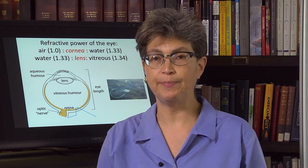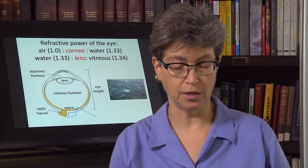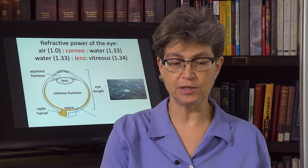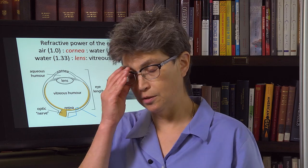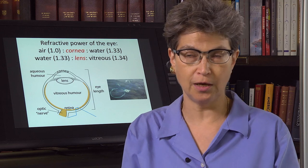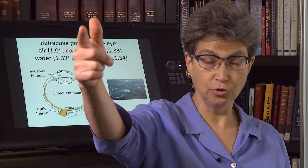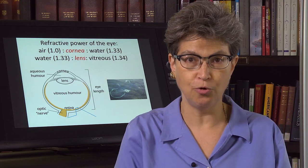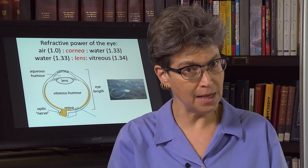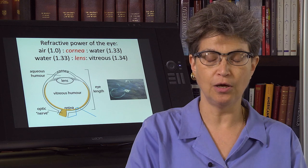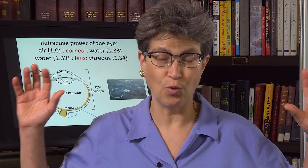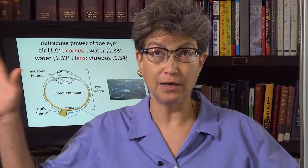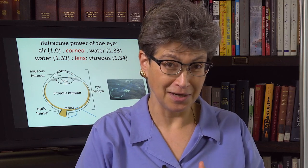Myopia is a big problem — it is at epidemic proportions in some parts of the world, including Eastern Asia. There appears to be some genetic susceptibility, but there is also a huge environmental component. For a long time, people thought it might be too much time spent in near vision. But it's now coming to light that the wavelengths of light experienced during growth and development are very key. You need natural wavelengths — the natural spectrum of sunlight rather than indoor lighting. So get your kids outside and have them play outside.